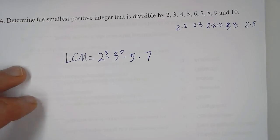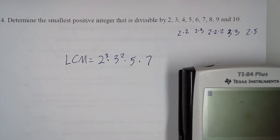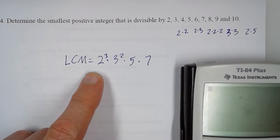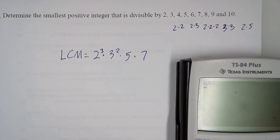So if we go to the next prime number, that would be 11, but that's past our list. So now, all we have to do is multiply out 2 to the 3rd times 3 squared.